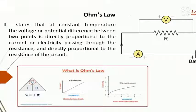So this on your screen is the statement for Ohm's law. Basically Ohm's law states that at a constant temperature, the voltage or potential difference between two points is directly proportional to the current or electricity passing through the resistance and directly proportional to the resistance of the circuit.